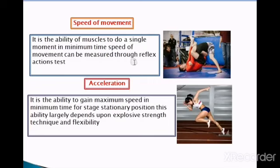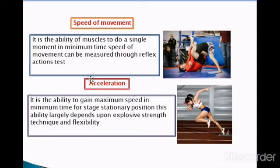The next type is acceleration — the ability to gain maximum speed. It depends upon explosive strength, which is the combination of speed and strength. Acceleration is used in sprint races, hockey, basketball, and football. As you can see in the picture, the athlete is taking a start and reaching full speed quickly.